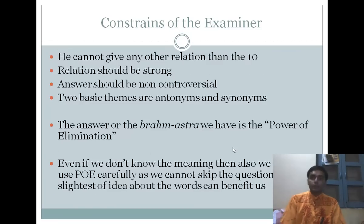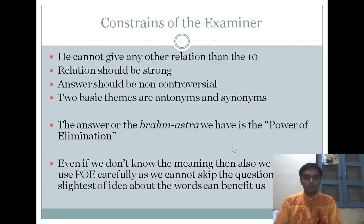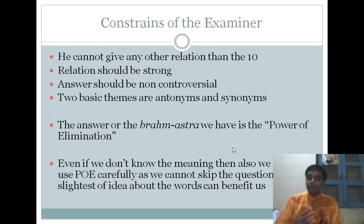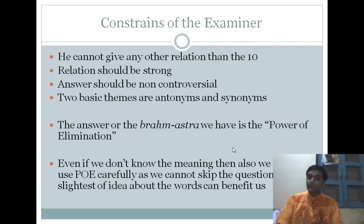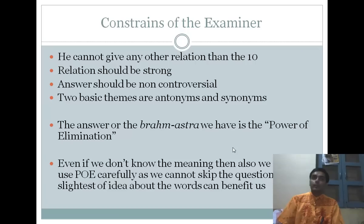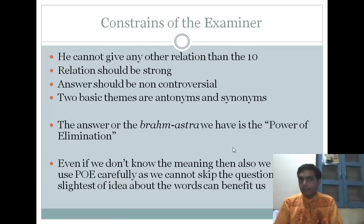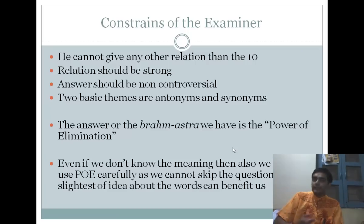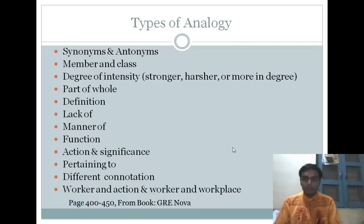The constraints of the examiner: the examiner cannot give any relation other than the standard ten types. The second and most important constraint — the heart of understanding analogies — is that the relationship must be very strong. No analogy can have a weak relationship, because the author has to be non-controversial. So we are going to use the power of elimination selectively and understand the examiner's constraints to solve analogies. When we keep all these things in mind, things become quite easy.